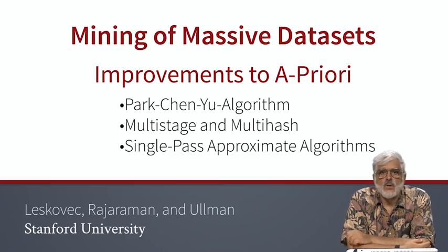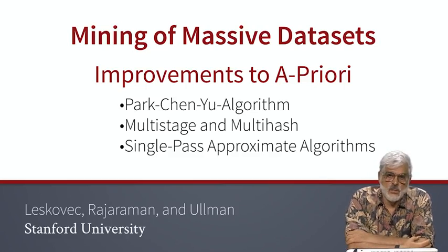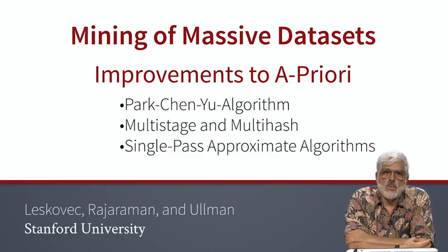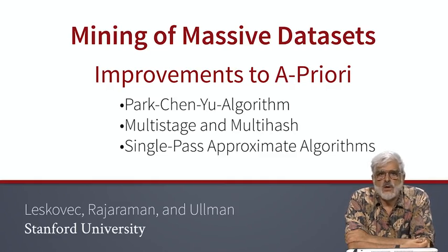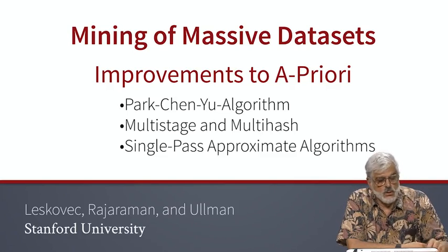Then we'll go in another direction. We'll accept that the result might not be accurate — that is, we'll allow the algorithm to fail to identify some of the frequent item sets. But we want to finish quickly, preferably in only one pass, or perhaps one pass and a little more. Several approaches of this type will also be discussed.